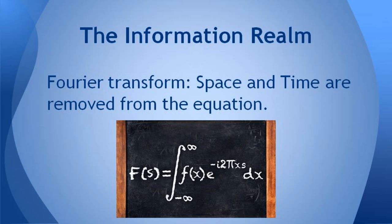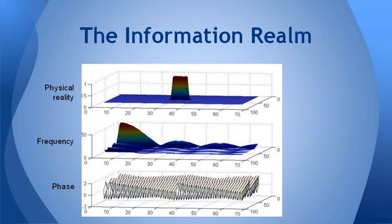So using the Fourier transform, or at least some generalized transform, we can remove space and time from the equations that describe objects. So here's an example of an object in the top graph that's just a block sitting there, and its position, and the frequency spectrum is on the second graph, and the phase of those frequencies is on the bottom graph.